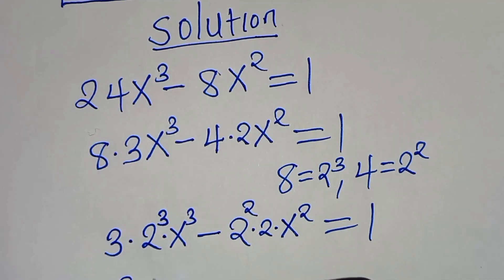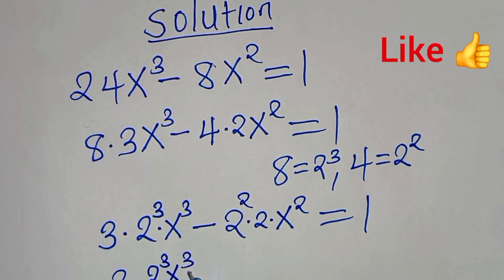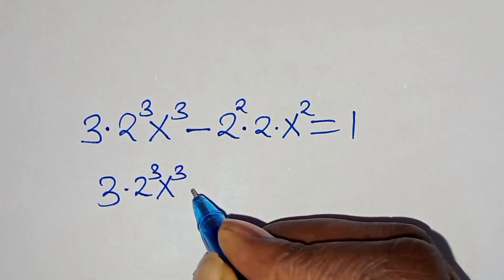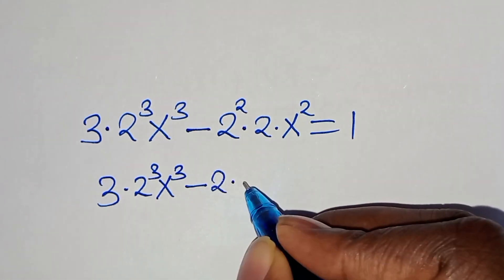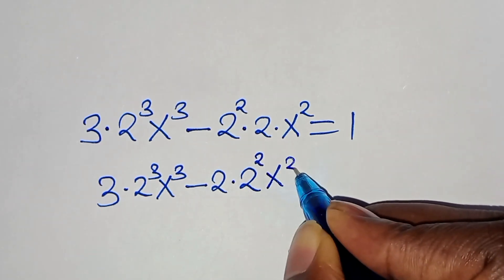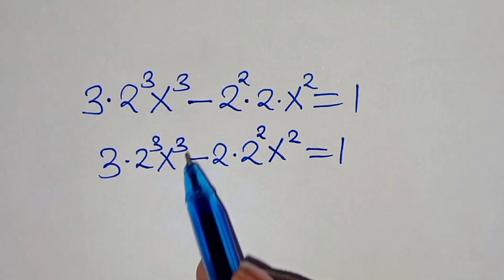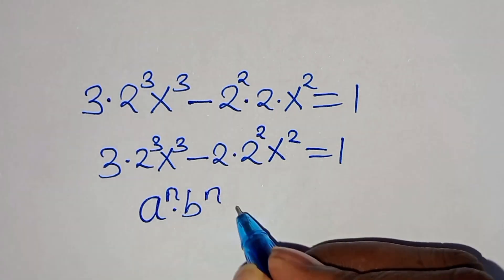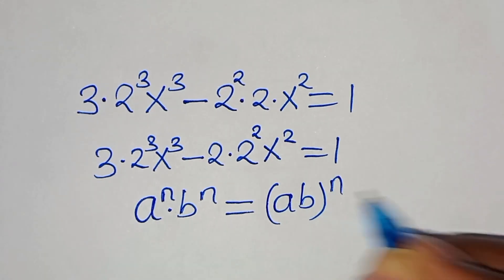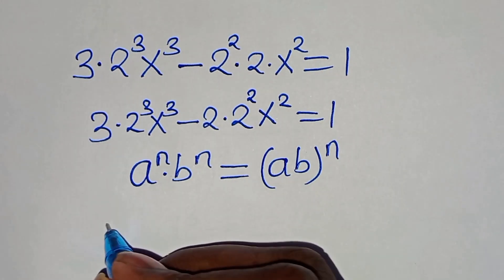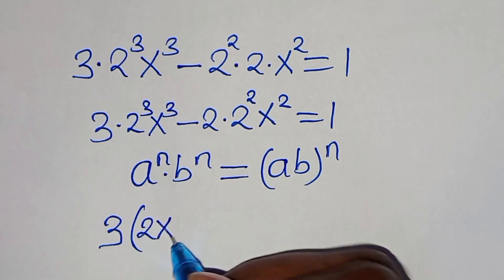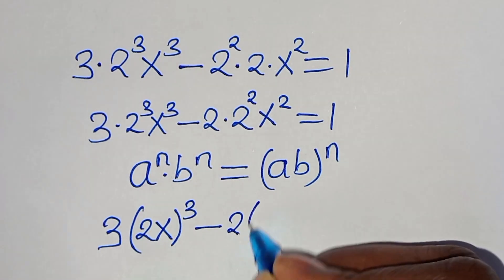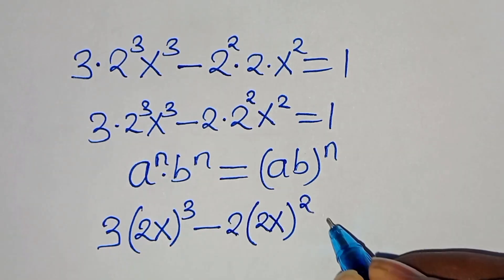So, here we have 3 times 2 to the power of 3 multiplied by x to the power of 3, minus — now here we have 2 times 2 to the power of 2 times 2 to the power of 2, then x multiplied by x to the power of 2, this is equal to 1. Now, from here, we can express 2 to the power of 3 times x to the power of 3 in the form of a to the power of n times b to the power of n, which we can express as (ab) raised to the power of n. So, applying this exponent property, we have 3 times (2x) raised to the power of 3, then subtract 2 times (2x) raised to the power of 2, this is equal to 1.